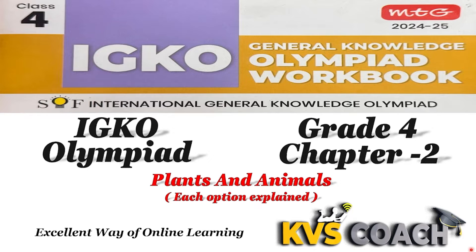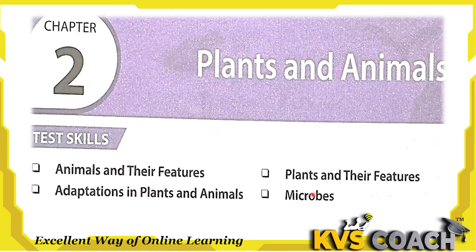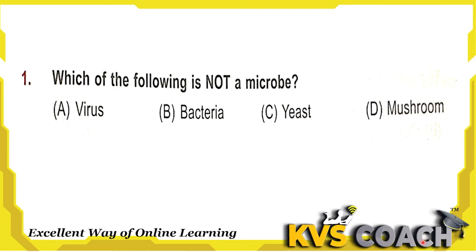Hello dear kids, now we are going to discuss Chapter 2 from your IGQ Olympiad workbook, and its name is 'Plants and Animals.' In this chapter we are going to discuss animals and their features, plants and their features, adaptations in plants and animals, and microbes.